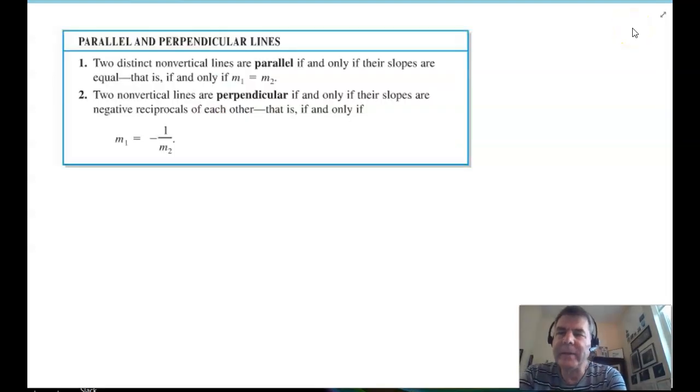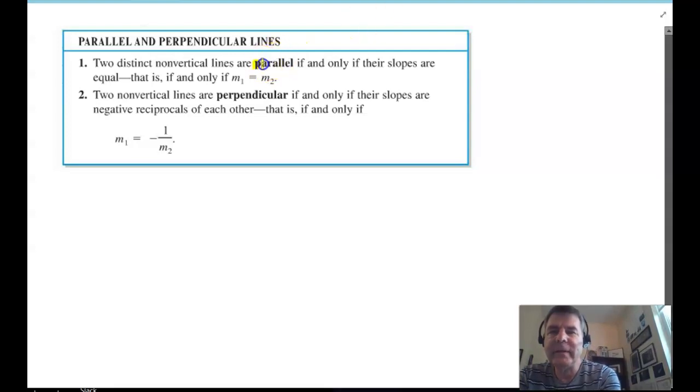And our last topic on linear models is parallel and perpendicular lines. If two non-vertical lines have the same slope, then they are parallel. Now, two non-vertical lines are perpendicular if and only if their slopes are negative reciprocals. So, that means you're going to flip the slope and change the sign.